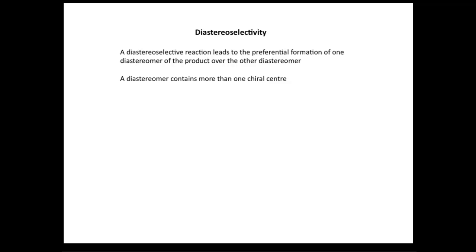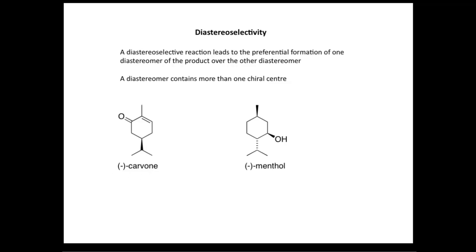A diastereoisomer contains more than one chiral center. We'll look at a couple of compounds and play spot the chiral center. The first compound on the left is minus carvone, and if we look for chiral centers in carvone, you'll see there's just one. So we have one chiral center in carvone, and we cannot have diastereoisomers.